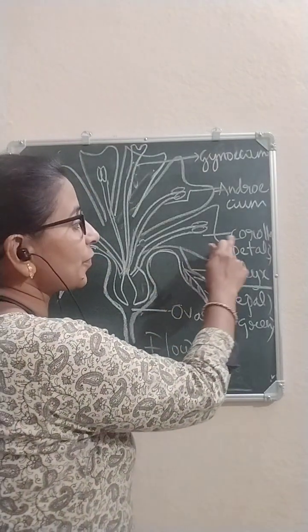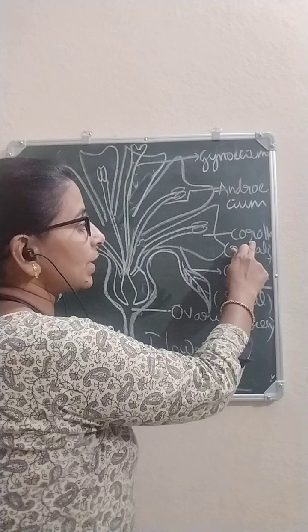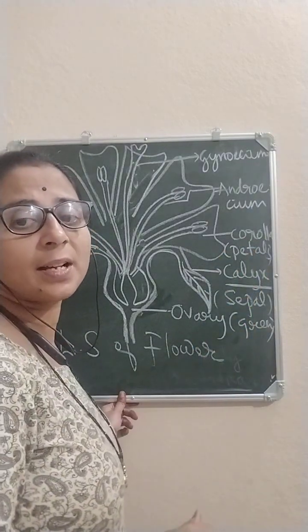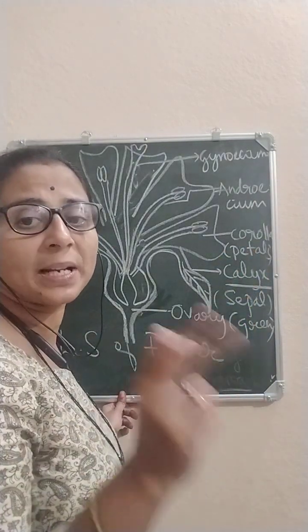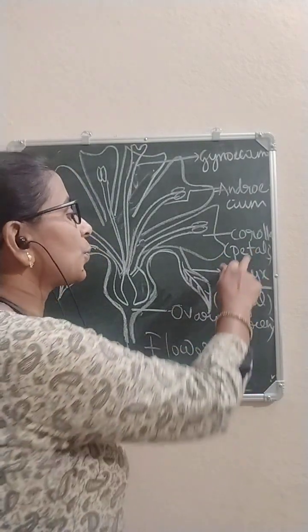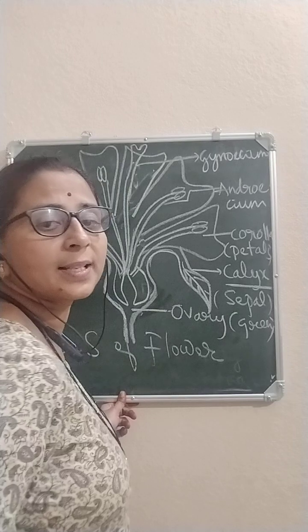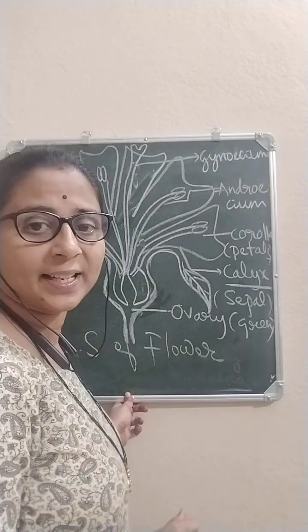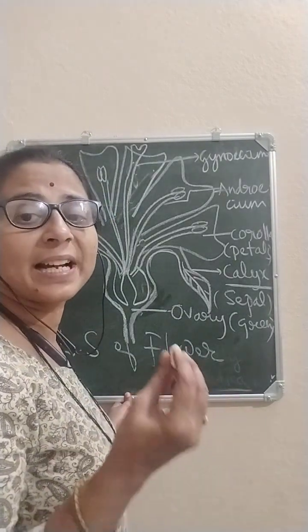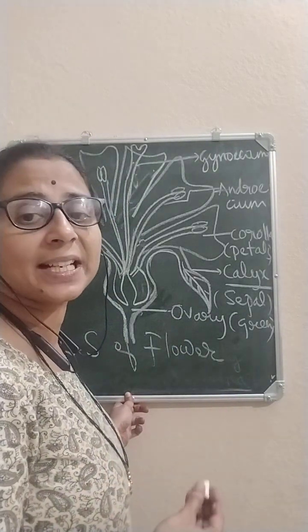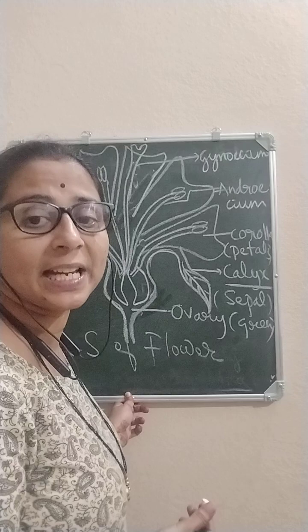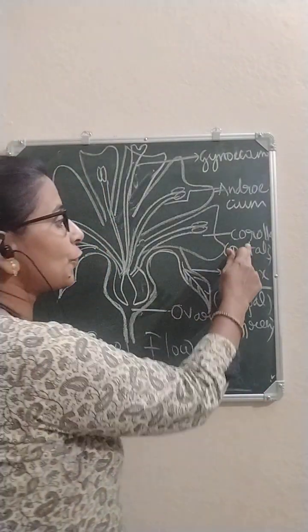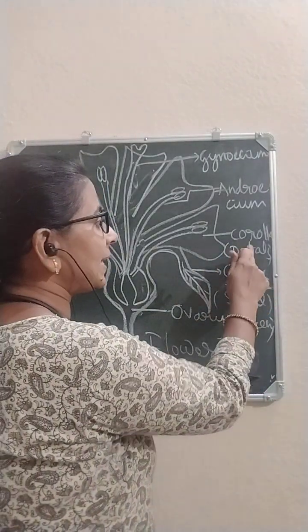The second member of a flower is called corolla. Each member of corolla is called petals. Petals are brightly coloured, which attracts insects for pollination. That is the function of corolla petals.